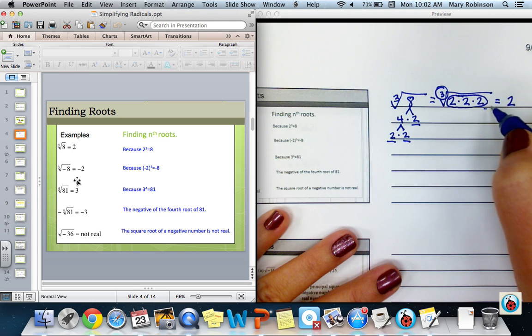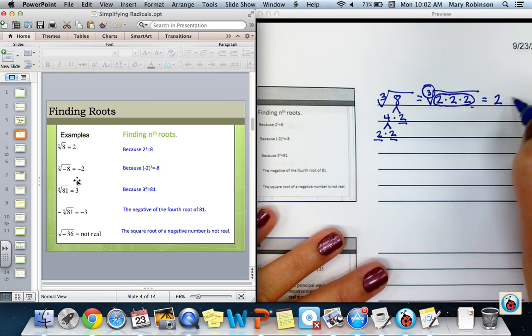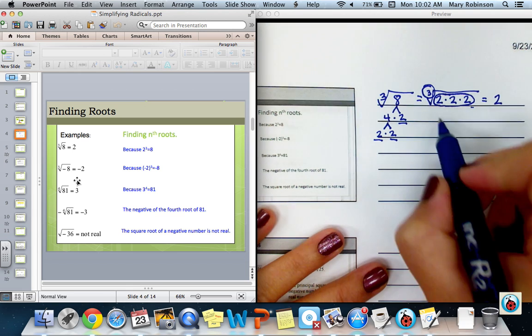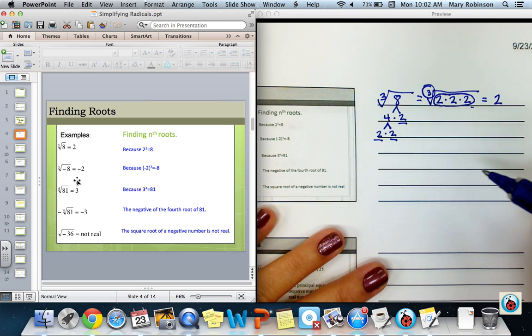If there was a factor left under the radical, I would continue to keep that under the radical. But since everything gets grouped, I know that the cube root of 8 is 2.